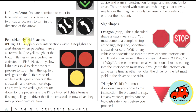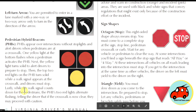Pedestrian hybrid beacons, or PHBs, appear over intersections without stoplights and alert drivers when pedestrians are at a crosswalk. One yellow light at the bottom flashes when a pedestrian activates the PHB. Next, the yellow light turns solid to alert drivers to prepare to stop. Then the top two red lights turn solid while the walk signal appears at the crosswalk and drivers must stop. Lastly, while the walk signal counts down for pedestrians, the PHB's two red lights alternate flashing — telling drivers that if the crosswalk is clear, they may proceed with caution.